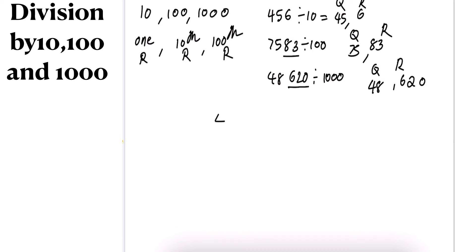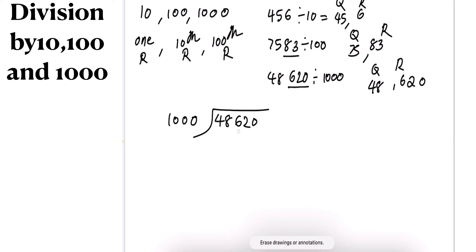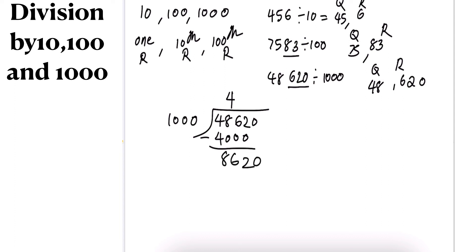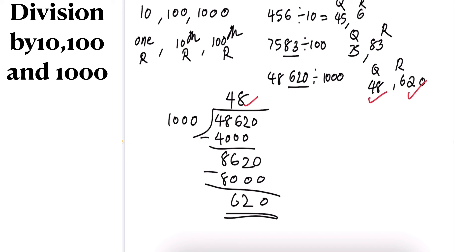Let's verify 48620 divided by 1000 by long division. Consider 4862 first. 4×1000=4000; subtract to get 862, then bring down 0. 8×1000=8000... the remainder is 620, and 48 is the quotient. Very simple.